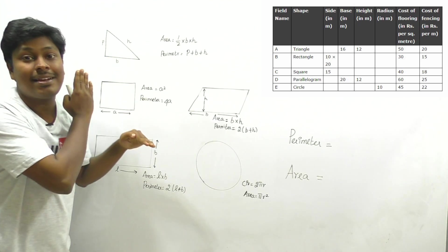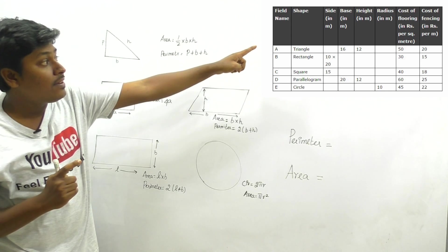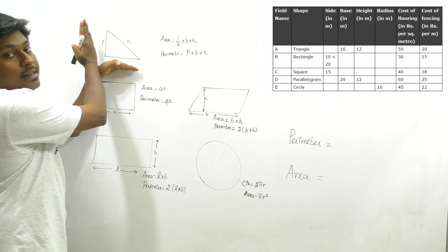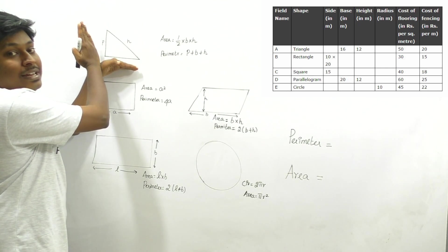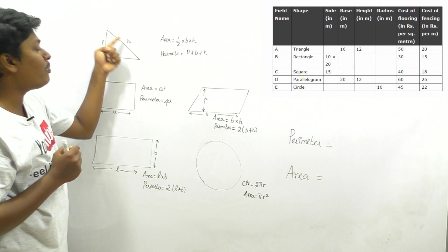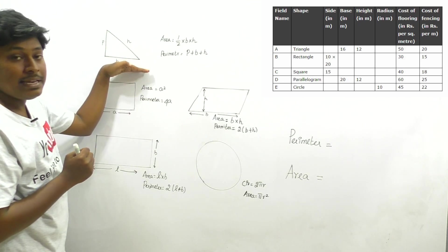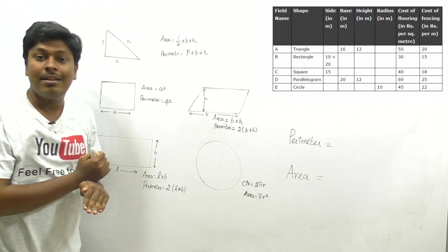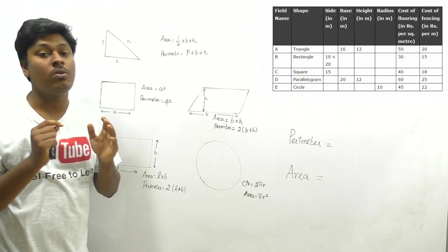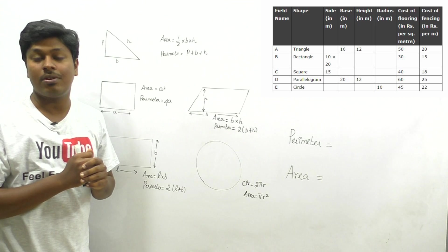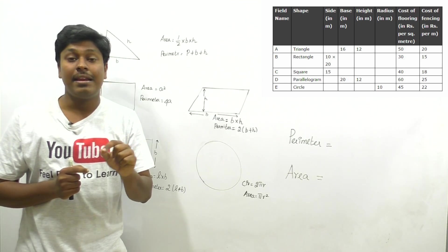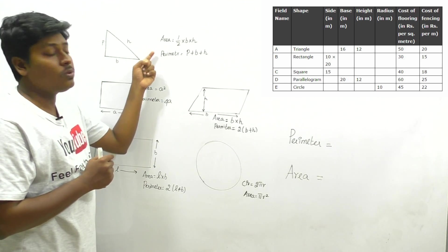Remember: if only base and height are given, it is called a right angle triangle. The base is the base of the triangle and the height is the perpendicular height — not the hypotenuse. So if base and height are given, the triangle is a right angle triangle. Each triangle type has a different area formula, so don't make mistakes.